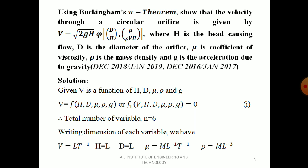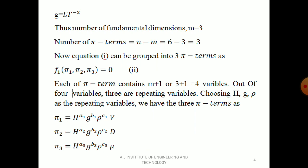As we can see, velocity has L and T, H has L, D has L, μ has M, L, and T, ρ has M and L, and G has L and T. So the number of fundamental dimensions M = 3. Therefore, from Buckingham's Pi theorem, the number of pi terms is N − M = 6 − 3 = 3. So we have 3 pi terms: F1(π₁, π₂, π₃) = 0 — take this as expression 2.